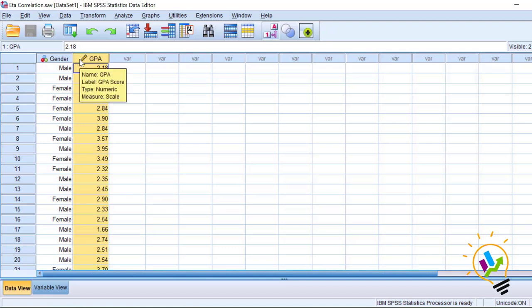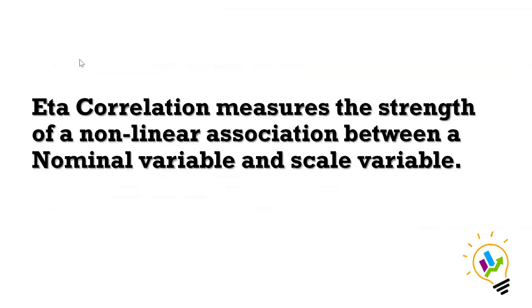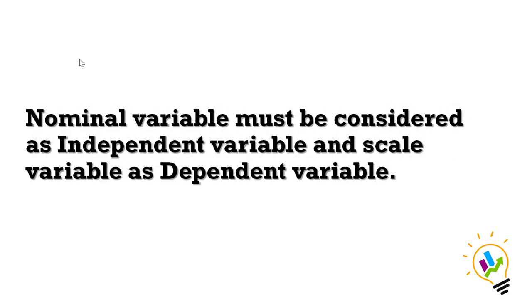That is correlation between a nominal variable and a scale variable. We must use eta correlation. Eta correlation measures the strength of a non-linear association between a nominal variable and a scale variable. Nominal variables must be considered as independent variable and scale variable as dependent variable. Now let us do the analysis.